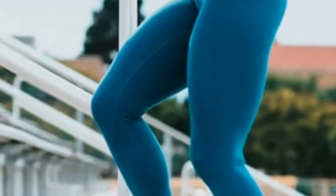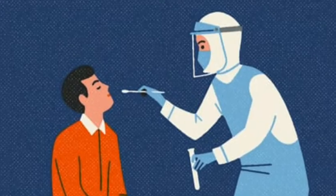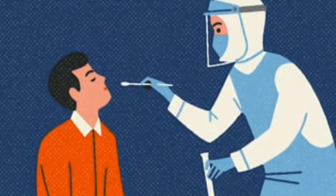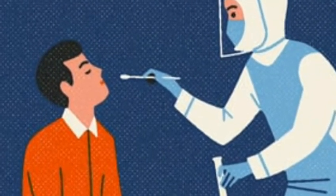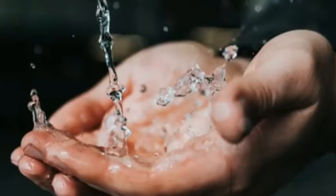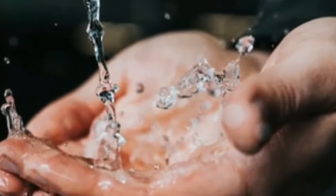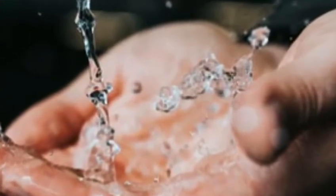Not all heavy drinkers develop alcohol hepatitis, and the disease can occur in people who drink only moderately. If you are diagnosed with alcoholic hepatitis, you must stop drinking alcohol. People who continue to drink alcohol face a higher risk of serious liver damage and death.